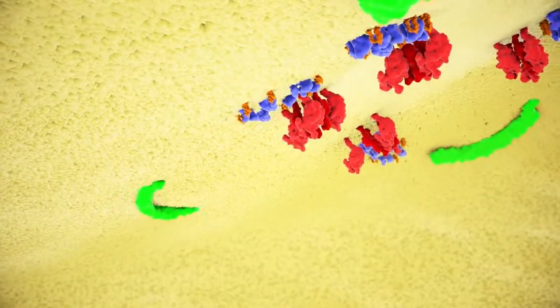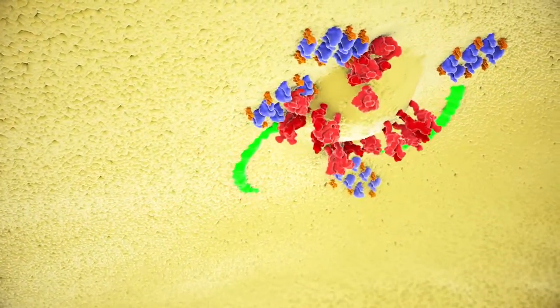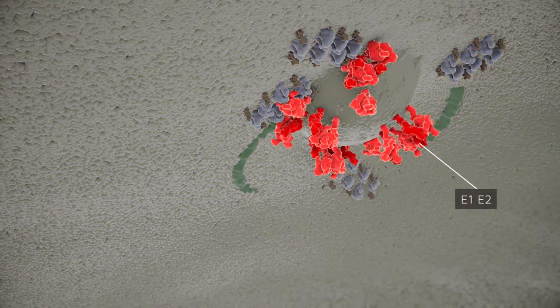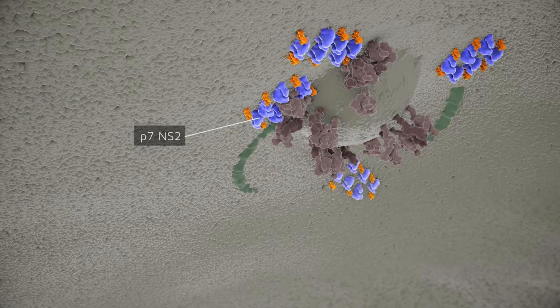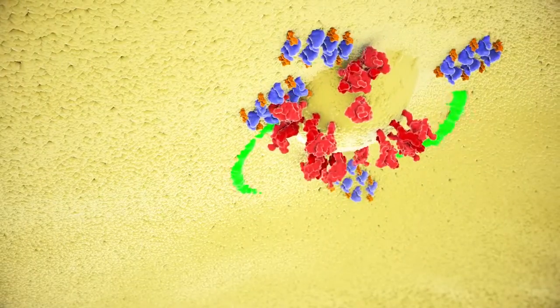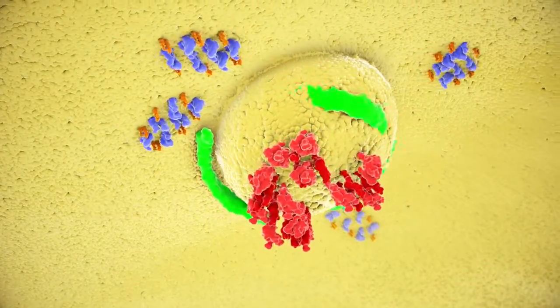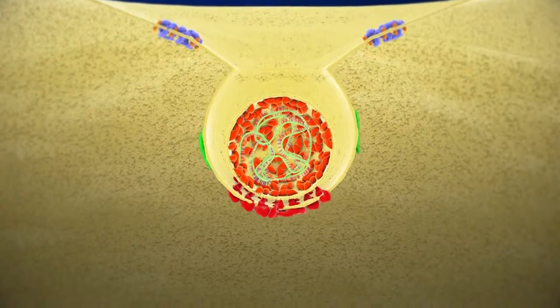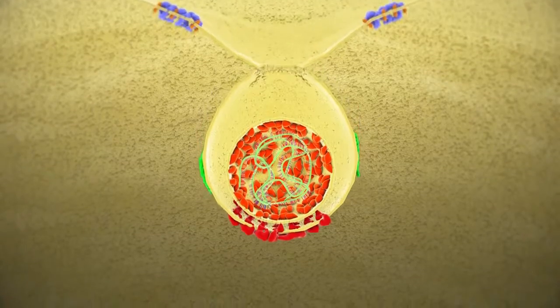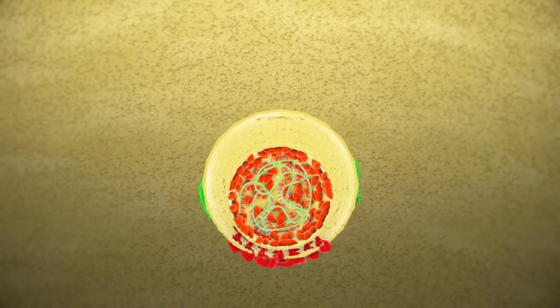Nucleocapsids form at ER-derived membranes where E1 and E2 accumulate in conjunction with P7, NS2 and host factors including apolipoprotein E. The viral envelope glycoproteins are acquired by budding, a process which appears to be linked to the very low density lipoprotein machinery.